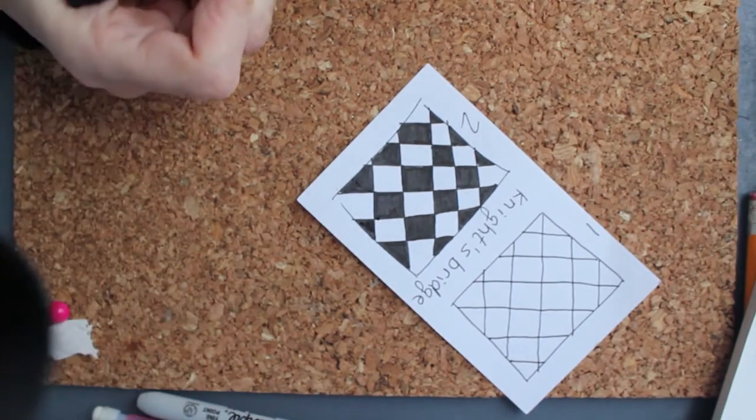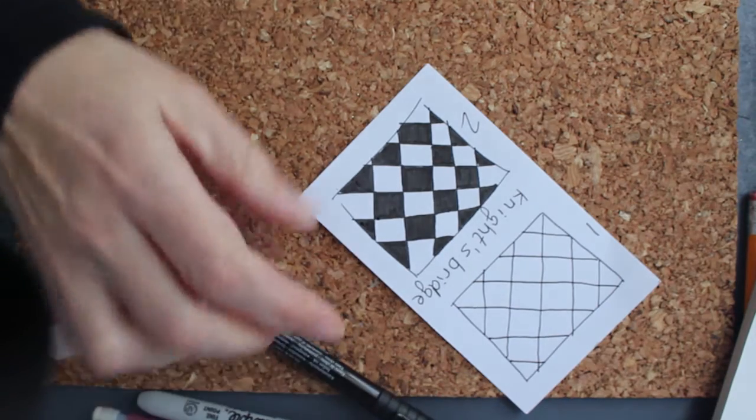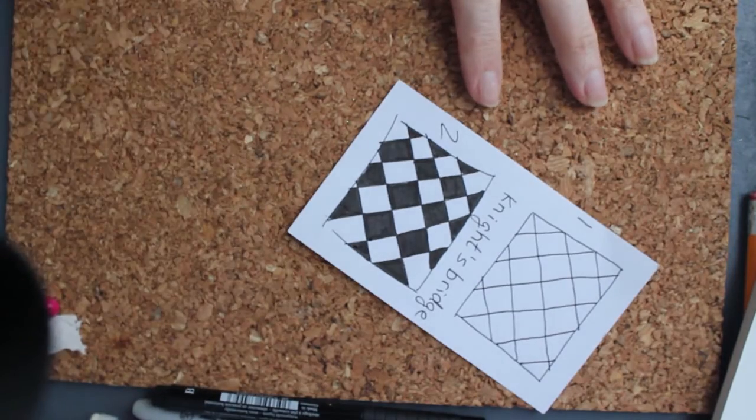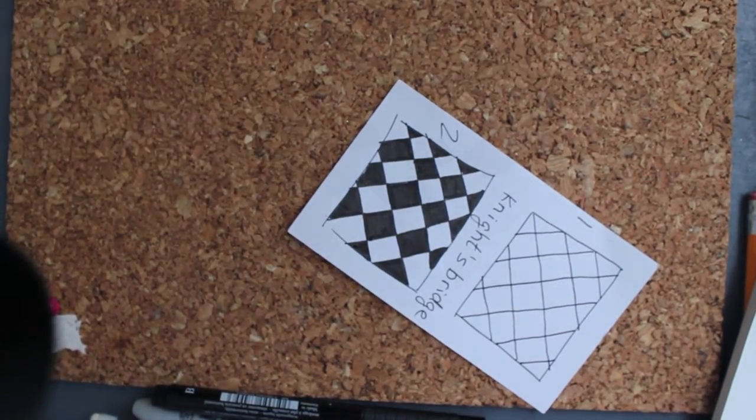Okay, so it's a diagonal checkerboard. Let me show you one of the designs I used that uses Knight's Bridge. Let me go get that.